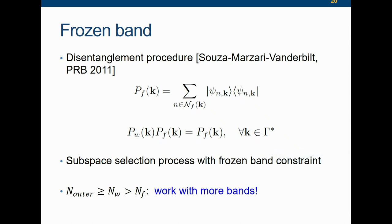This is a subspace selection process with a frozen band constraint. In practice, you work with three numbers: the outer window size, the number of Wannier functions you are interested in, and the number of frozen bands for each k-point. At the beginning when we tried to understand this entanglement procedure, we couldn't understand it very well because we didn't know in the variational sense what it is minimizing. Now we think we have a better understanding — we don't know what it is minimizing because it is not minimizing a variational functional. It is better viewed as an incomplete minimization problem.